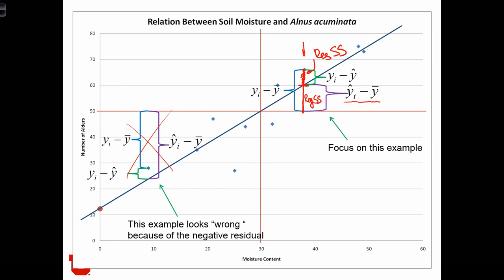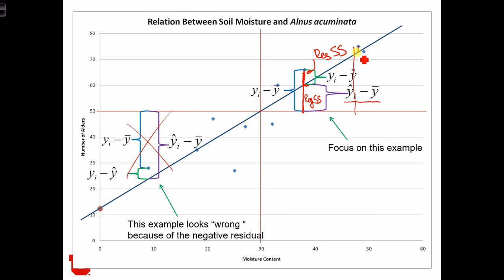Let's imagine that this regression line passed very, very close to our observed point. Let's find an example where that happened — the regression line comes very close to passing by this point over here. In which case, when we look at these quantities — the total sum of squares, the regression sum of squares, and the residual sum of squares — we see that the residual sum of squares is a very small fraction of the total sum of squares. Here, even the residual is a pretty small fraction of the total.